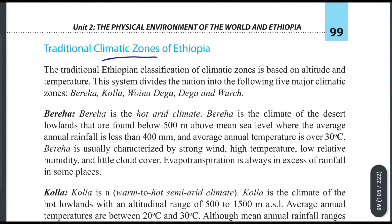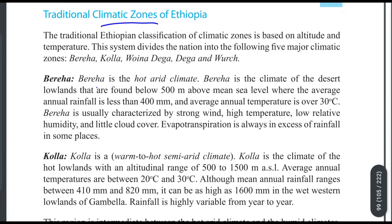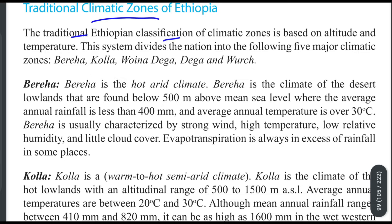This is the traditional climatic zones of Ethiopia. The traditional Ethiopian classification of climatic zones is based on altitude and temperature. This system divides the nation into five major climatic zones.